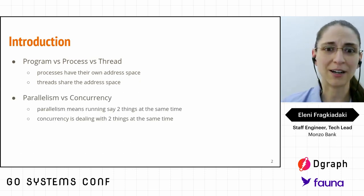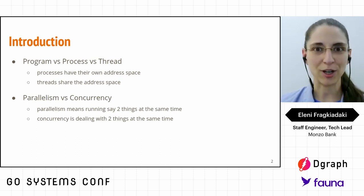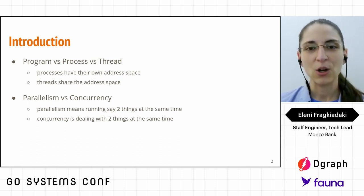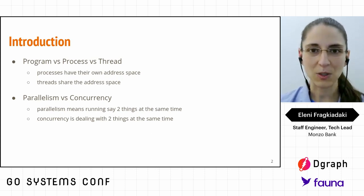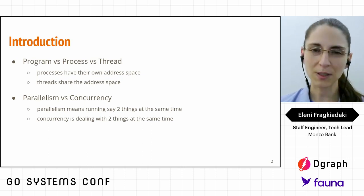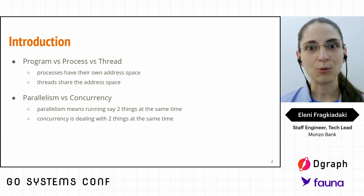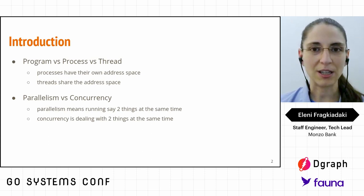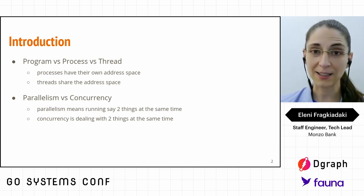Another useful concept to clarify is the difference between parallelism and concurrency. When we talk about parallelism, we are talking about things that are executed at exactly the same time. When we talk about concurrency, the concept is a bit different — it means being able to deal with more than one thing at the same time, but not necessarily executing them at the exact same point.